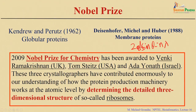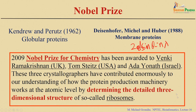For membrane proteins, in 1988 Deisenhofer, Michel, and Huber solved the structure of the first membrane protein — the photosynthetic reaction center — and got the Nobel Prize in 1988. In 2009, Venkatraman Ramakrishnan, Tom Steitz, and Ada Yonath, three crystallographers, enormously contributed to understanding the protein production machinery at the atomic level using 3D structures of ribosomes and got the Nobel Prize in 2009.